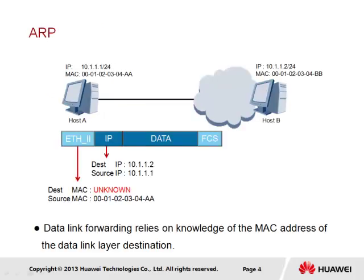The Address Resolution Protocol, or ARP, is another protocol that, like ICMP, has a close relationship to IP. While IP provides the logical path between a source and destination, which may or may not exist within the same network segment, the actual transmission of data relies greatly on the lower-layer protocols, such as Ethernet, in order to support the physical transmission.